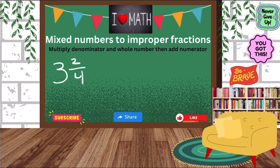First we have 3 and 2 fourths. In order to convert this into a fraction, you have to multiply the denominator and the whole number. So our denominator is 4 and our whole number is 3. Then we have to add the numerator, which is 2.